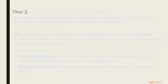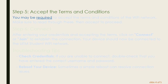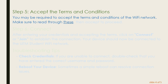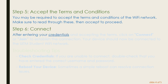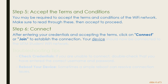Step 5: Accept the Terms and Conditions. You may be required to accept the terms and conditions of the Wi-Fi network. Make sure to read through these, then accept to proceed. Step 6: Connect. After entering your credentials and accepting the terms, click Connect or Join to establish the connection. Your device should now be connected to the UITM Student Wi-Fi network.